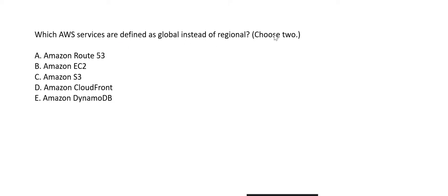Fourth question: which AWS services are defined as global instead of regional — choose two. EC2 is regional. Route 53 can create routing tables and patterns across the globe. CloudFront delivers content globally. The question may seem confusing since S3 in one region can be accessed from others, but true globalness means services like Route 53 can even work with on-premises environments.